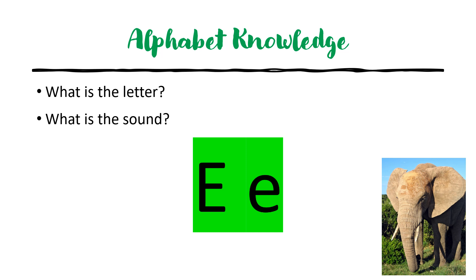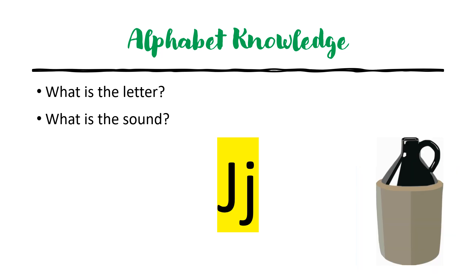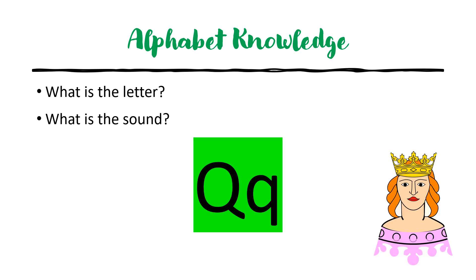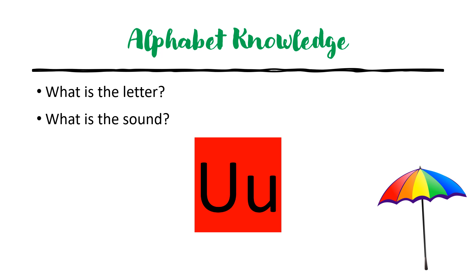What is the letter? E. What is the sound? E. What is the letter? N. What is the sound? N. What is the letter? J. What is the sound? J. What is the letter? Q. What is the sound? Q. What is the letter? U. What is the sound? U. What is the letter? U. What is the sound? U.